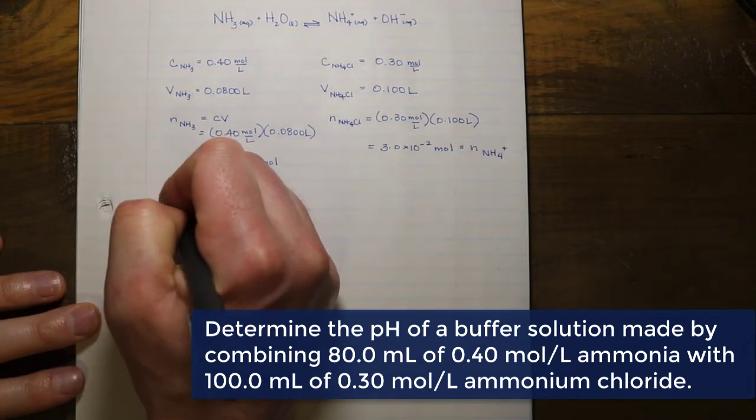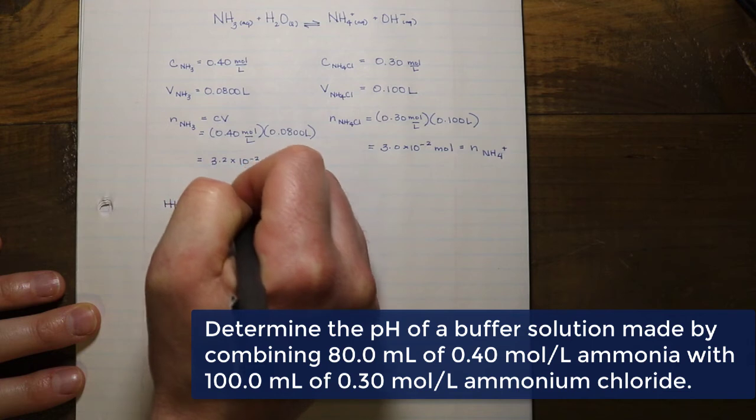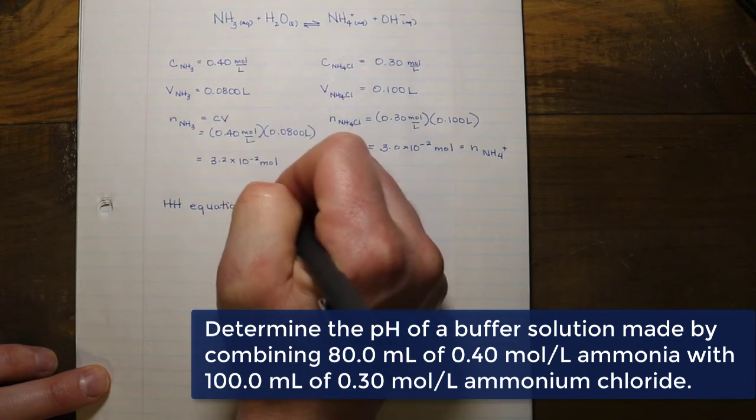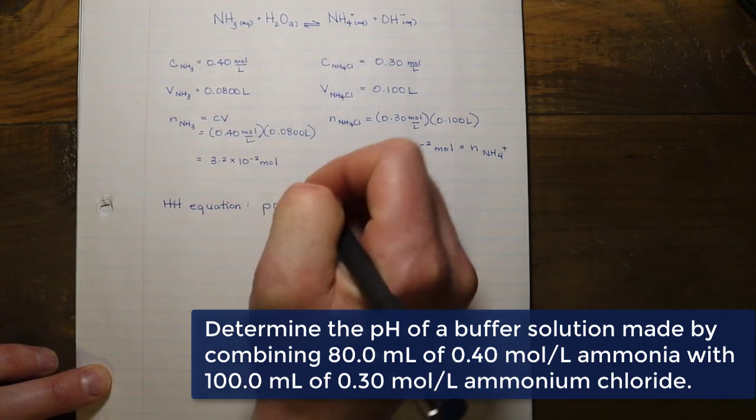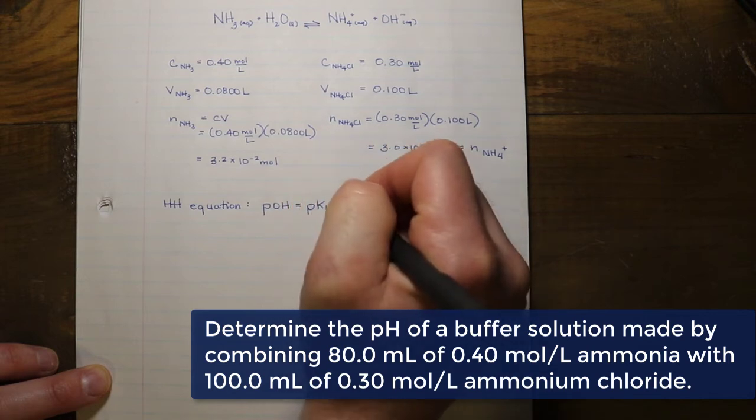Here we have a representation of the Henderson-Hasselbalch equation for solving for the pOH if we have a basic buffer scenario. If this was an acidic buffer scenario, we would be calculating for the pH and using the pKa as well as the concentration of the salt over the acid.